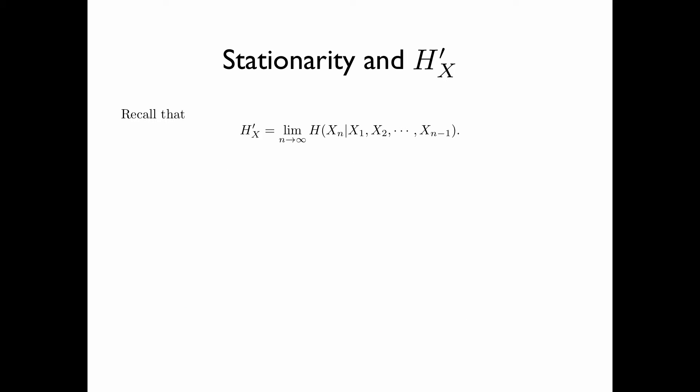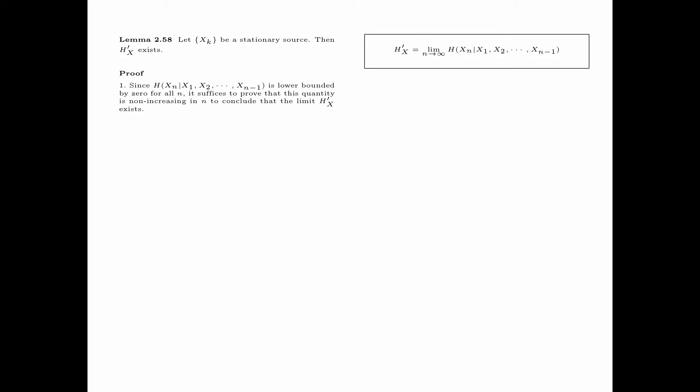Recall that H sub x prime is the limit as n tends to infinity of the entropy of xn given x1, x2, up to xn minus 1. The next lemma says that if x sub k is a stationary source, then the limit H sub x prime exists. Since the conditional entropy inside the limit is lower bounded by 0 for all n, it suffices to prove that this quantity is non-increasing in n to conclude that the limit H sub x prime exists.